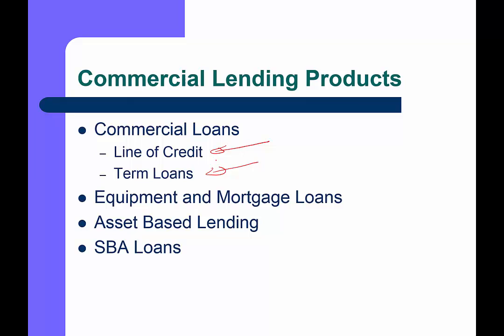The line of credit goes up and down, as opposed to a term loan, which is very much like purchasing a car — you get the money up front and then make a set kind of payments. Term loans in business are structured exactly the same way. Some variations of term loans are equipment and mortgage loans, and the key here is how they're secured.